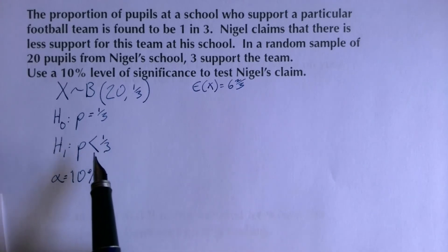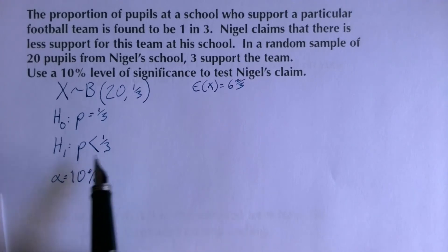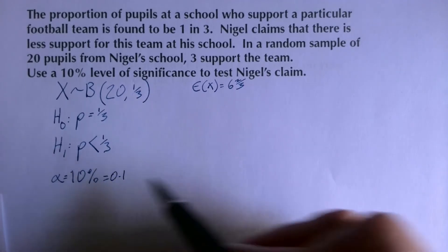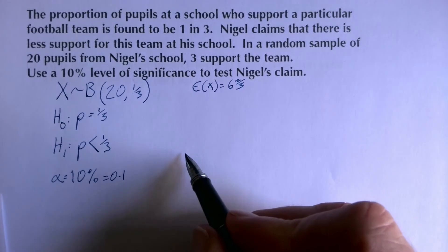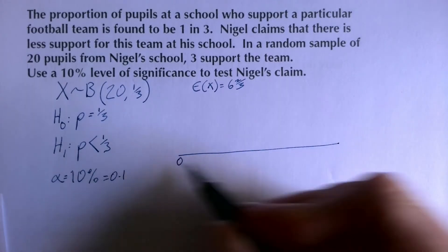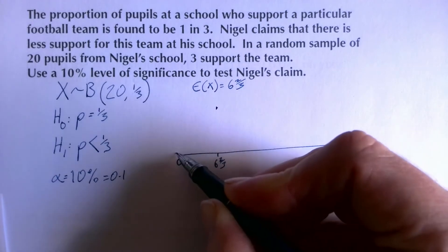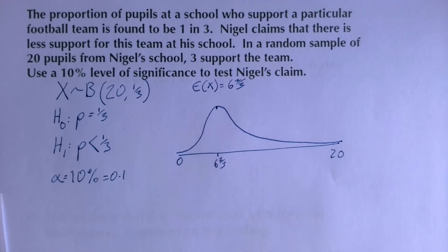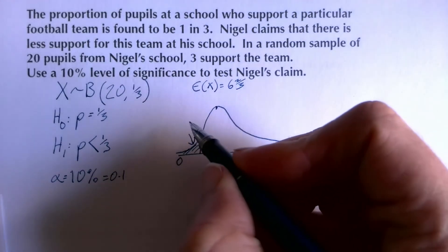The significance level is 10% (α = 0.1). The expected mean is one-third of 20 = six and two-thirds. Sketching from zero to twenty, the mean sits at about six and two-thirds. We want to know whether three supporters falls in the critical region at the lower tail.